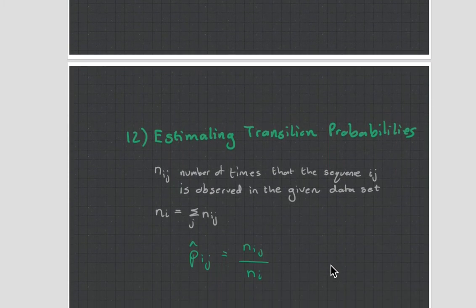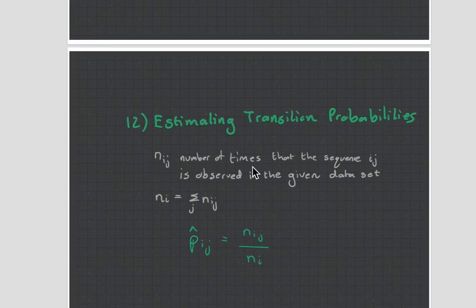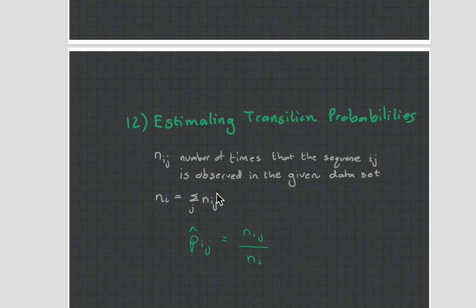Estimating transitional probabilities is quite straightforward. NIJ is the number of times that the sequence IJ is observed in the given data set. And then basically you count how many times these transitions happened by the sum of the transitions to something else. And that's very intuitive.